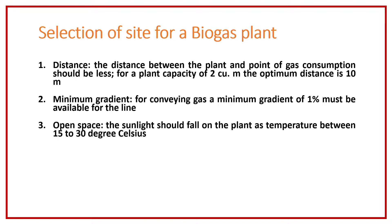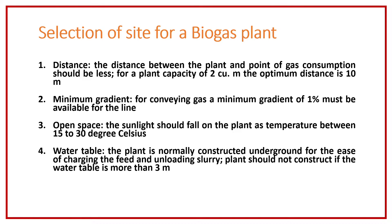The next point is there should be enough open space available so that sunlight can fall on the biogas plant to maintain the temperature between almost 15 to 30 degrees Celsius for optimum working condition of the biogas plant. Next is the water table — we all know that mostly the biogas plant's digester is constructed beneath the ground.